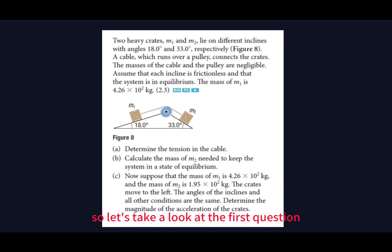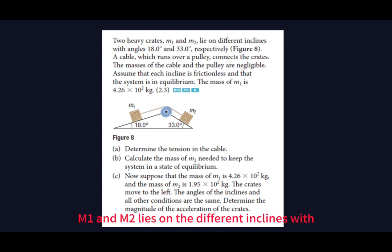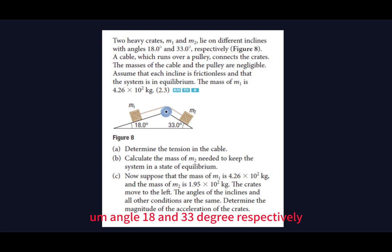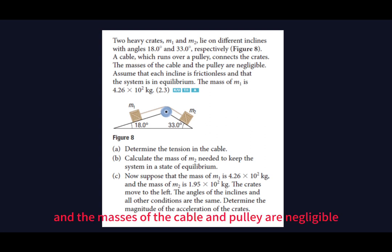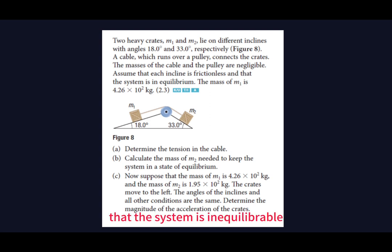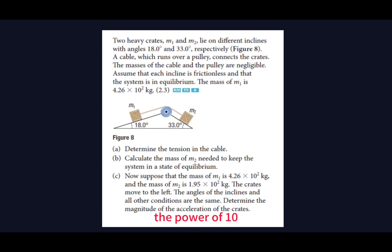Let's take a look at the first question. It says that two heavy crates, m1 and m2, lie on different inclines with angles 18 and 33 degrees respectively, and a cable which runs over a pulley connects the crates. The masses of the cable and pulley are negligible. Each incline is frictionless, the system is in equilibrium, and the mass of m1 is 4.26 times 10 squared kilograms.